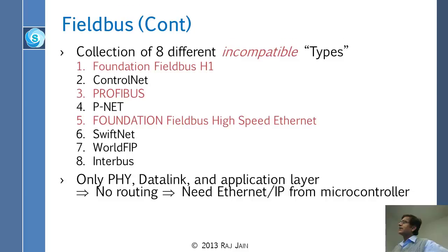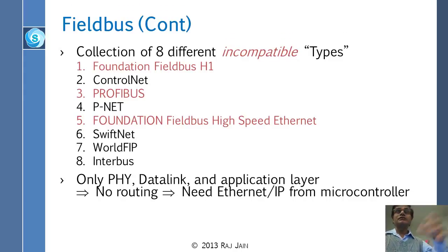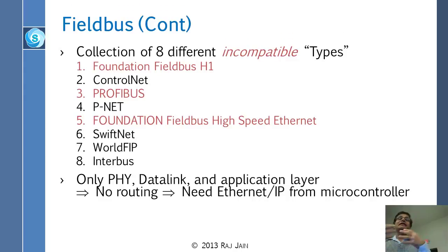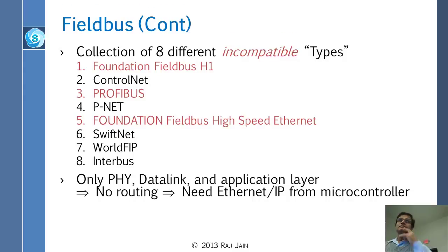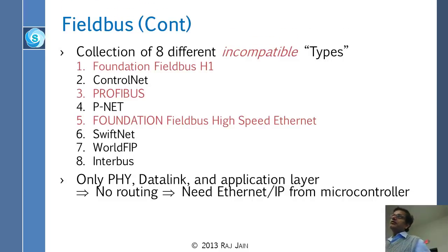Being compliant to this standard means very little, but at least you know these eight are standard because there are eighty others which are not. Another thing common about these different fieldbus variants is that they only cover the physical layer, data link layer, and application layer — they are one-and-a-half protocol stacks. There is no routing; messages have simple meaning like 'the light is up,' 'the light is down,' or 'fifty percent on.' The application sits right on top of the data link.